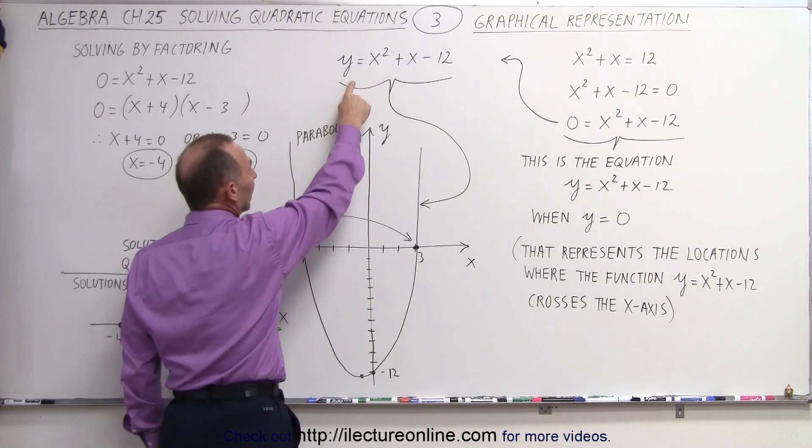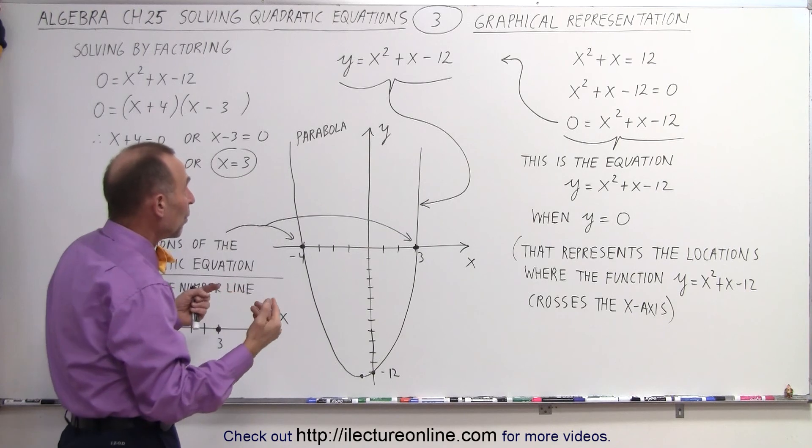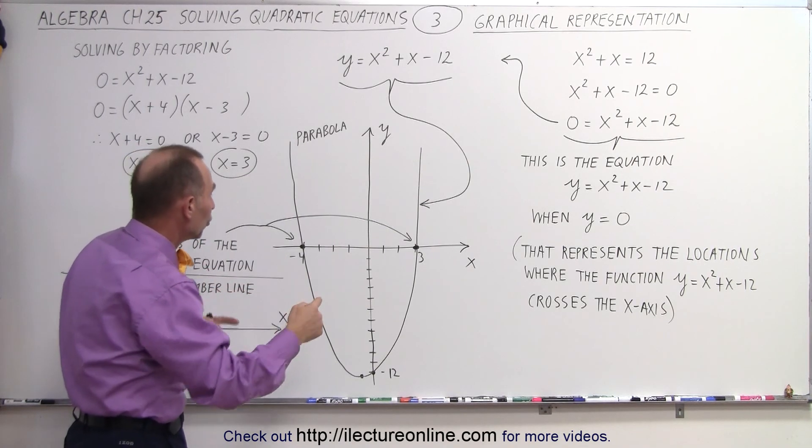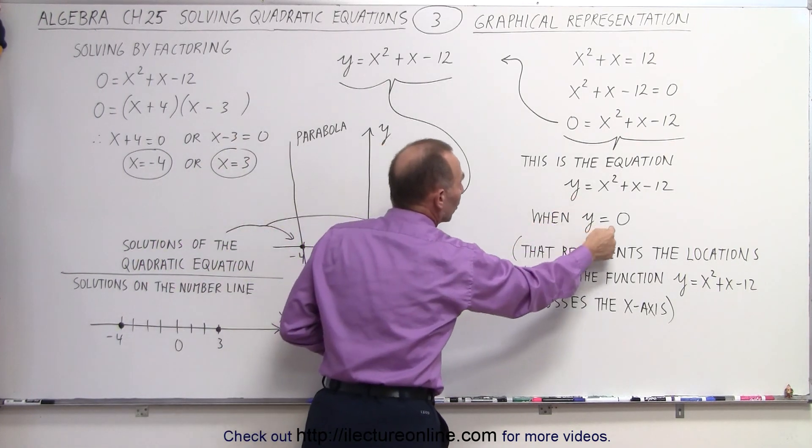Now, if we replace the y with 0 again, what are we essentially doing? That means we want to find where the function crosses the x-axis. So in essence, if we replace the y with a 0...